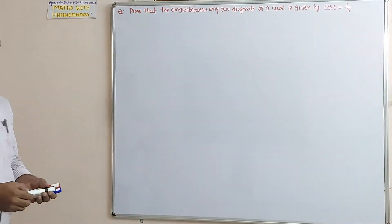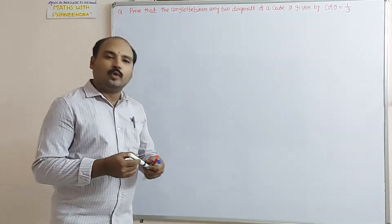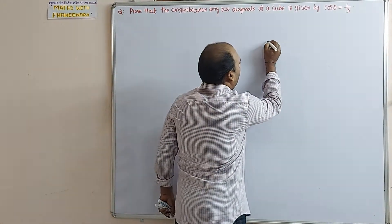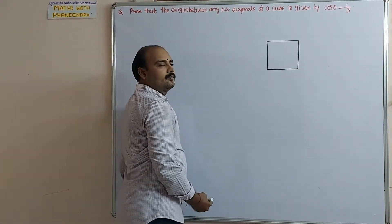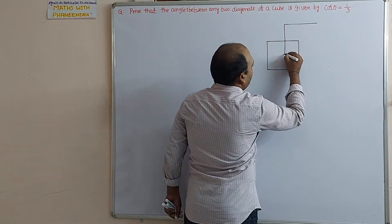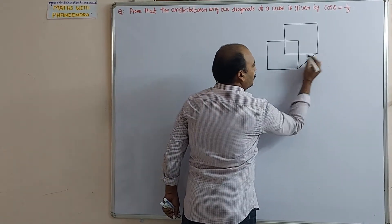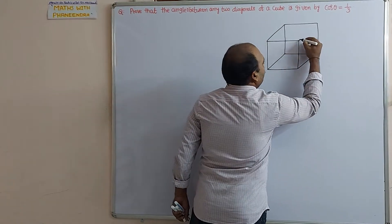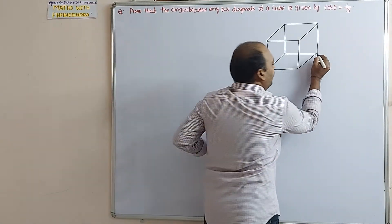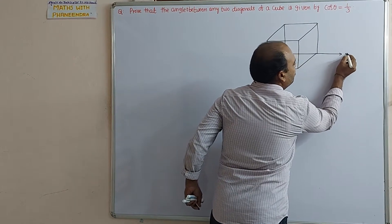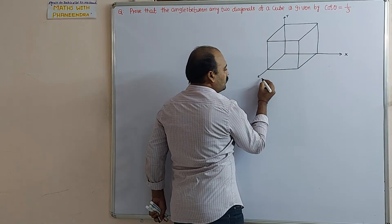For that, first what we are going to do is consider a unit cube. Without loss of generality, we have to consider a unit cube. I am drawing the unit cube here. You have to consider a cube and extend the axes: this is the x-axis, this is the y-axis, and this is the z-axis.